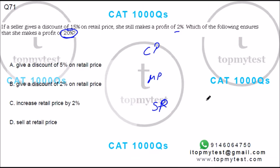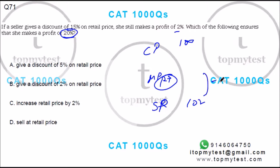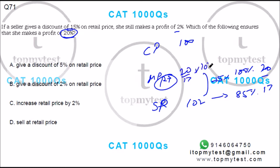She's making a profit of 2%, so if your cost price is 100, your selling price will be 102. Mark price is your retail price. Now this is after giving a discount of 15%, which means this represents 85% of the full amount. 85% is 17 by 20, so this number should be 20 by 17 of 102, which is 120.